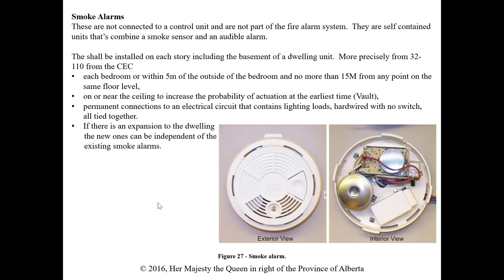Smoke alarms are different from smoke detectors — a smoke alarm is self-contained, combining a smoke detector and audible alarm in one device, used in residential applications without a control panel. Per CEC rule 32-110, they shall be installed on each floor including the basement of a dwelling unit, in each bedroom or within five meters outside a bedroom, and no more than 15 meters from any point on the same floor level, on or near a ceiling. They are permanently connected to an electrical circuit containing lighting loads — hardwired with no switch.